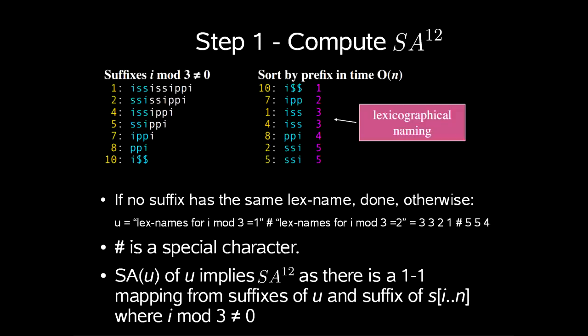So let me go through an example of this construction. We start by computing SA1-2 as it is called. The suffixes i mod 3 different from 0 is 1, 2, 4, 5 and so on. We sort these by prefix in time order n and we append sentinels to allow this. Now if no suffix is assigned to the same lex name we are done otherwise we do this. u is lex names for i mod 3 equal to 1 followed by a special character not occurring anywhere else concatenated on lex names for i mod 3 equal to 2. So this example is 3321 our special character 554. The suffix array SA of u implies SA1-2 as there is a one to one mapping from suffixes of u and suffixes of SI of n where i mod 3 is not 0.